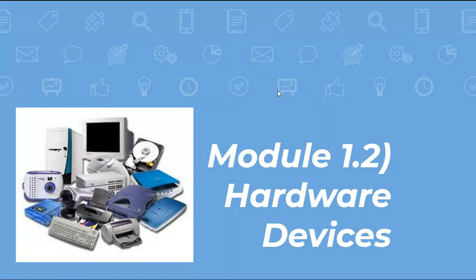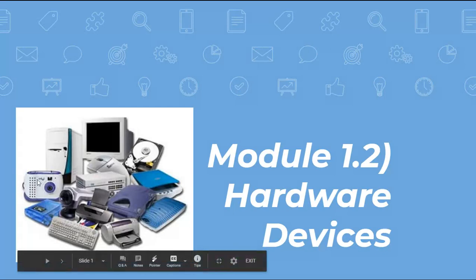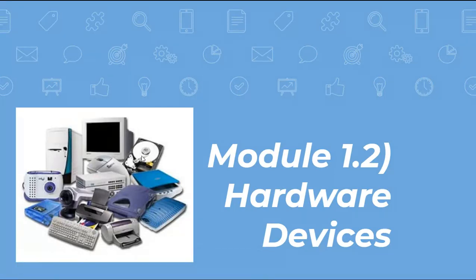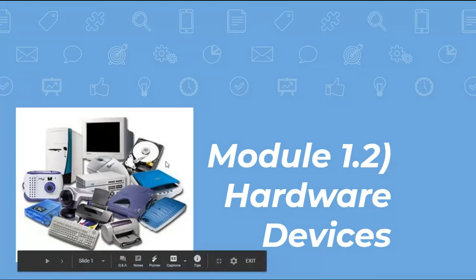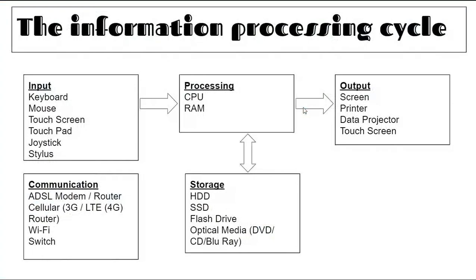Hardware is the physical parts of the computer that you can touch and see. They include your screen, your mouse, the keyboard, camera, the tower, desktop systems unit, your hard disk drive, scanner — all those physical components of the computer.